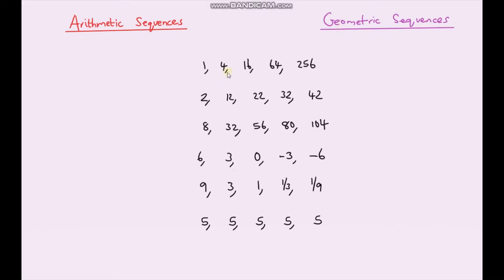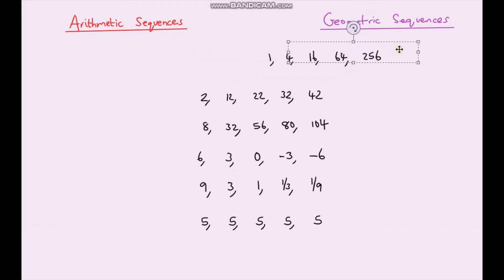Let's have a look. For the first one, to go from one to four you might say I'm adding three, and that's correct — but continuing that pattern, four plus three gives seven, not sixteen. So I can't add the same amount each time, meaning it's geometric. One times four is four, four times four is sixteen, sixteen times four is 64, and 64 times four is 256. So this is a geometric sequence.